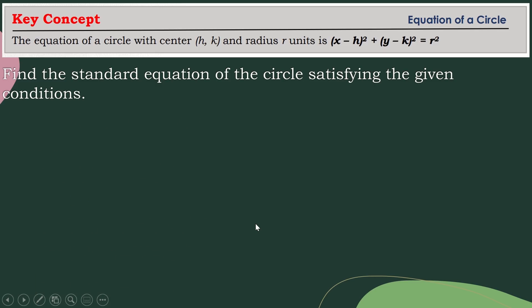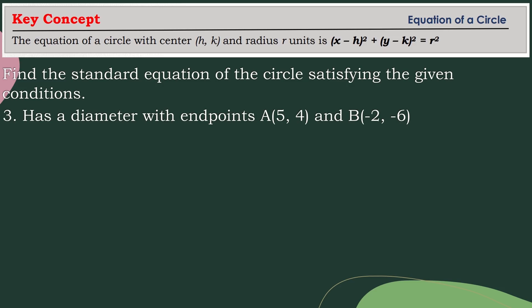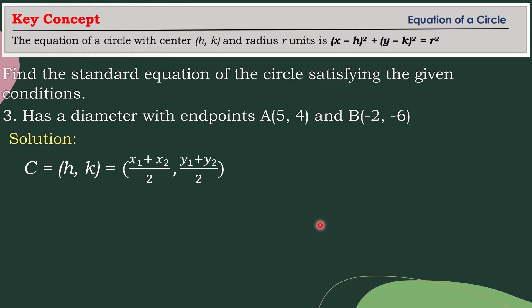Now what if you are just given the endpoints of the diameter? How are you going to find its standard equation? For example, a circle has a diameter with endpoints A(5, 4) and B(negative 2, negative 6). Remember that in order to find its equation, we need to know first the coordinates of the center and its radius. So first, we need to find the coordinates of the center by using the midpoint formula, which is: x-sub-1 plus x-sub-2 all over 2, and y-sub-1 plus y-sub-2 all over 2.